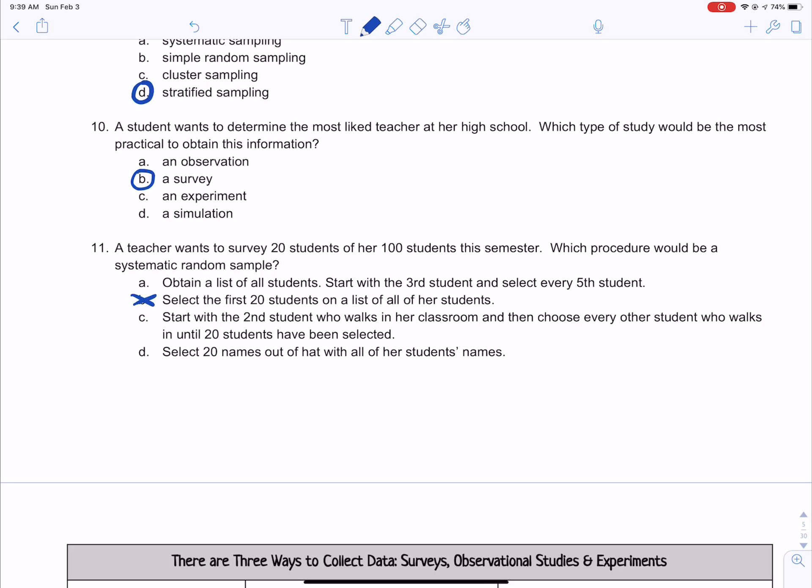C says start with the second student who walks in her classroom and then choose every other student who walks in until 20 students have been selected. And then D says select 20 names out of a hat with all of her students' names. So if she wants systematic, that would not be it because that is just a simple random sample, SRS.